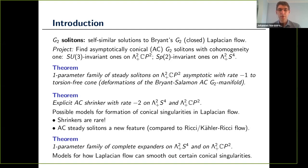Whenever I mention G2 solitons on λ²⁺ of CP², I mean ones invariant under a natural S³ action. When I talk about solitons on λ²⁺ of S⁴, I mean ones invariant under a natural S² action. Our main result is that we are able to find asymptotically conical G2 solitons of all three types: expanding, shrinking, and steady. One point in the one-parameter family of steady solitons on λ²⁺ of CP² is simply the Bryant-Salamon torsion-free G2 manifold considered as a trivial soliton, but it admits a one-parameter family of deformations to non-trivial solitons.